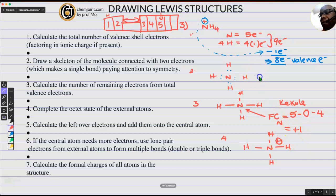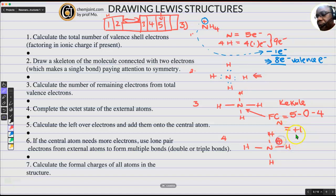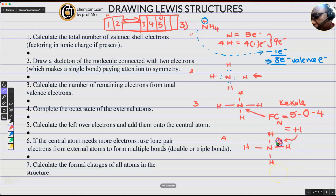Kekulé will show it like that, but Lewis would have stopped here. So put a plus charge there, because that's what we determined from our formal charge calculation. Put a plus charge there. Let's do another example.